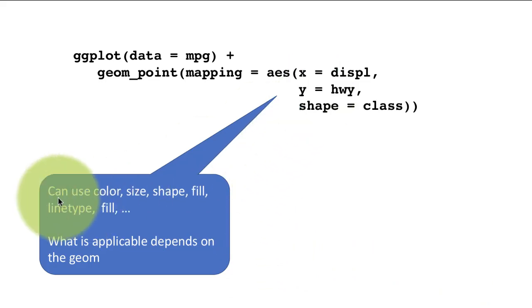So we can use many other aesthetics, color, size, shape, fill, line type, all of those aesthetics are available. And which aesthetics are applicable depend upon the geom to which they are being applied. So for example, for geom_point, which is a scatter plot, clearly line type is not going to be applicable. Because line type is an aesthetic that will be applicable only to line kind of plots, plots where the layer draws a line of some kind. For point, only color, shape, size, etc. are valid. So there are many different types of aesthetics. And what is applicable depends upon the geom to which you apply it.